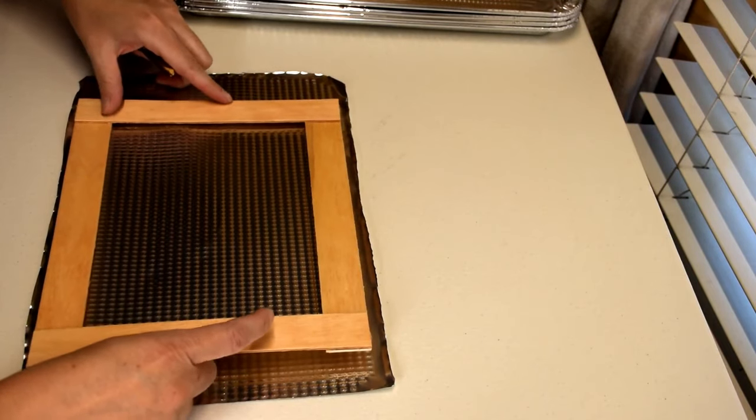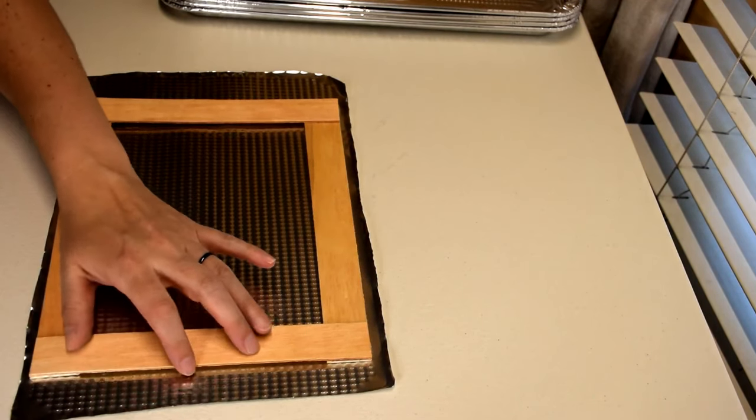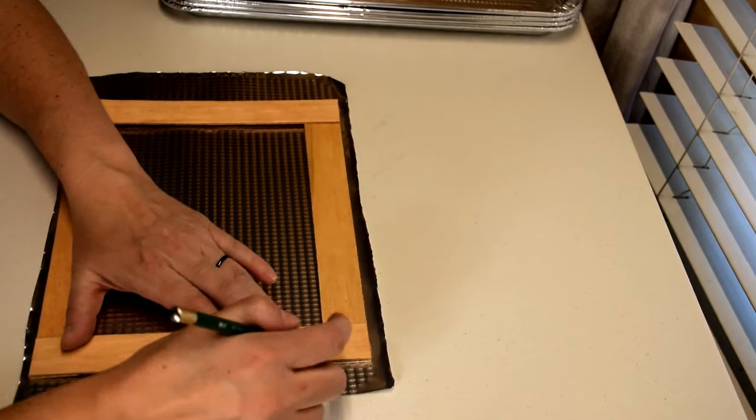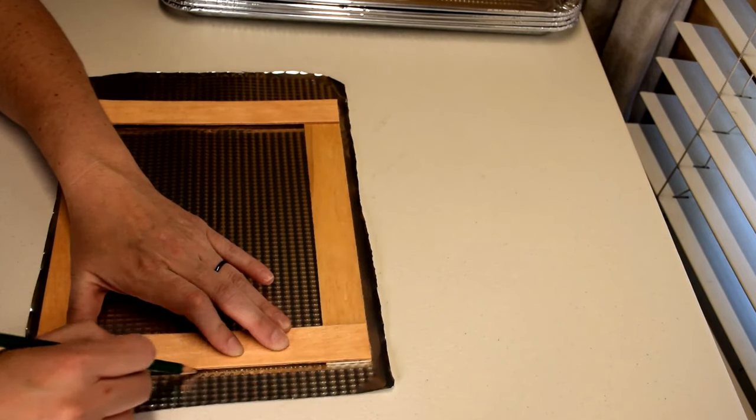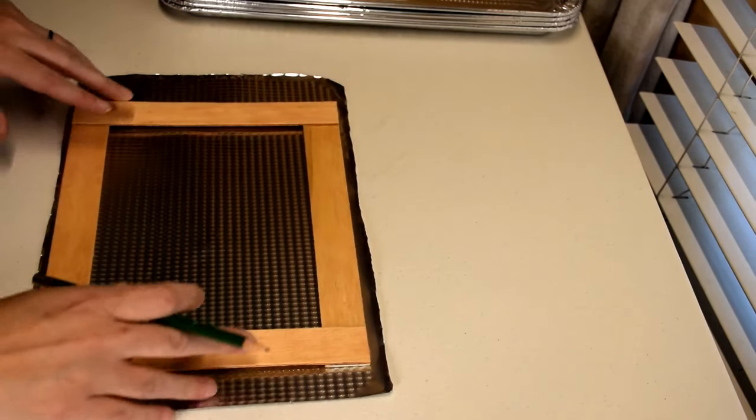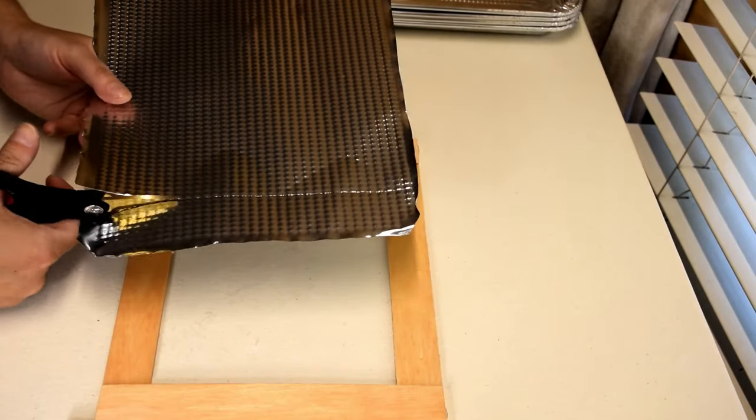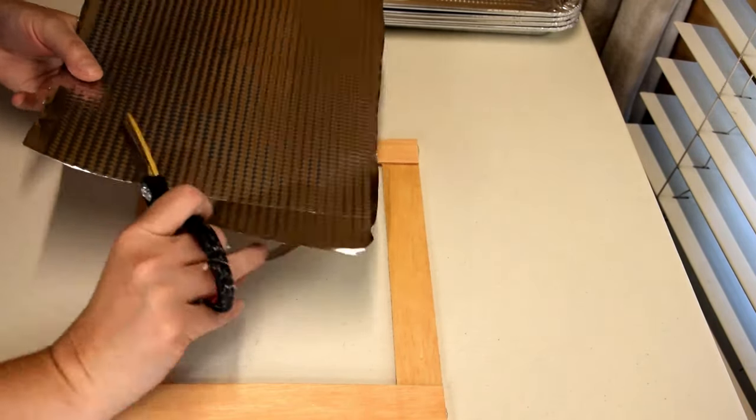Use your frame as a template for the cookie sheet. You can mark it with a pencil and trim it down to match the size of the frame. Trim the cookie sheet to fit, taking care not to scratch yourself on the tray.